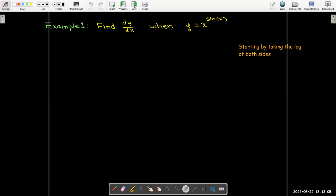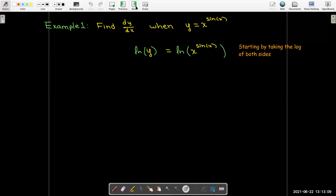So we're going to start by taking the log of both sides of that equation. Now I can use a log property here to bring the sin(x) out in front of the natural log of x.